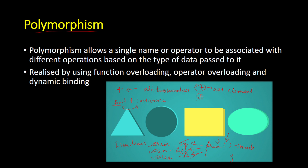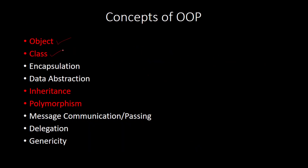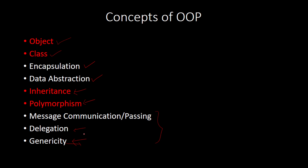These are the concepts covered today. The major ones are: object; class, which is a collection of objects; encapsulation, which joins data and code into a single unit called class; data abstraction, similar to data hiding, where unwanted details are hidden from the user; inheritance, where details from one class are used in another; and polymorphism, where one operator or element performs multiple functionalities. Apart from these, there are three additional concepts: message passing and communication, delegating work from one object to another, and generalizing object concepts — the last being closely related to inheritance.